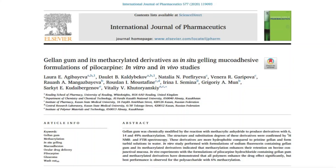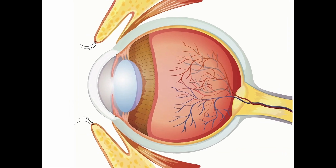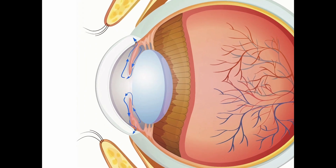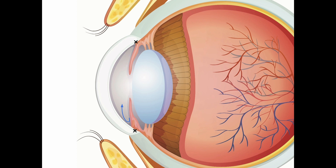Our eye produces a fluid called aqueous humor. It flows through a pupil into an anterior chamber and drains through a sponge-like structure called the trabecular meshwork. In patients with glaucoma, the drainage is inefficient, which leads to an increase in the pressure within the eye.